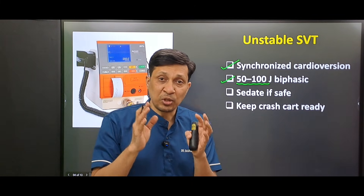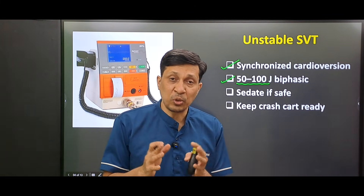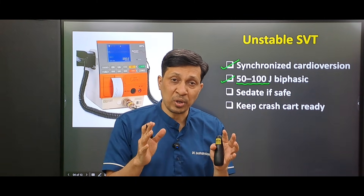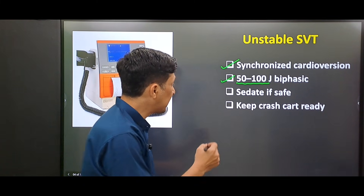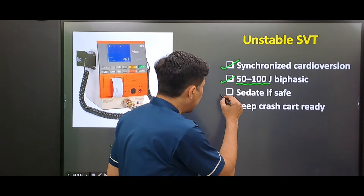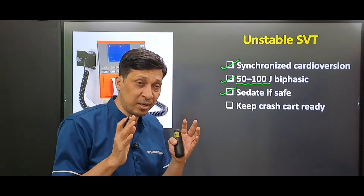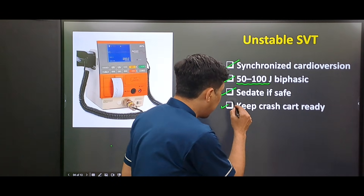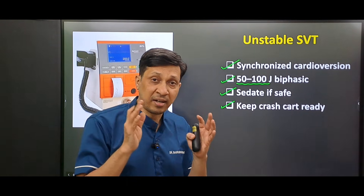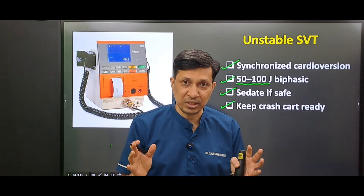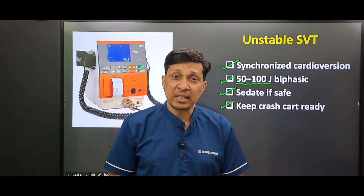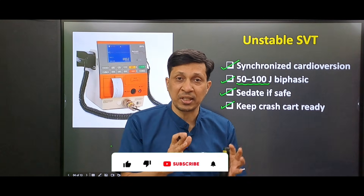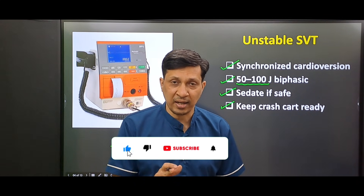If there is no response, you can increase it up to 150 or 200 joules. If the patient is conscious and it is safe, you should sedate the patient, and you will always keep a crash cart ready while doing cardioversion. This is the management of an unstable patient with supraventricular tachycardia.